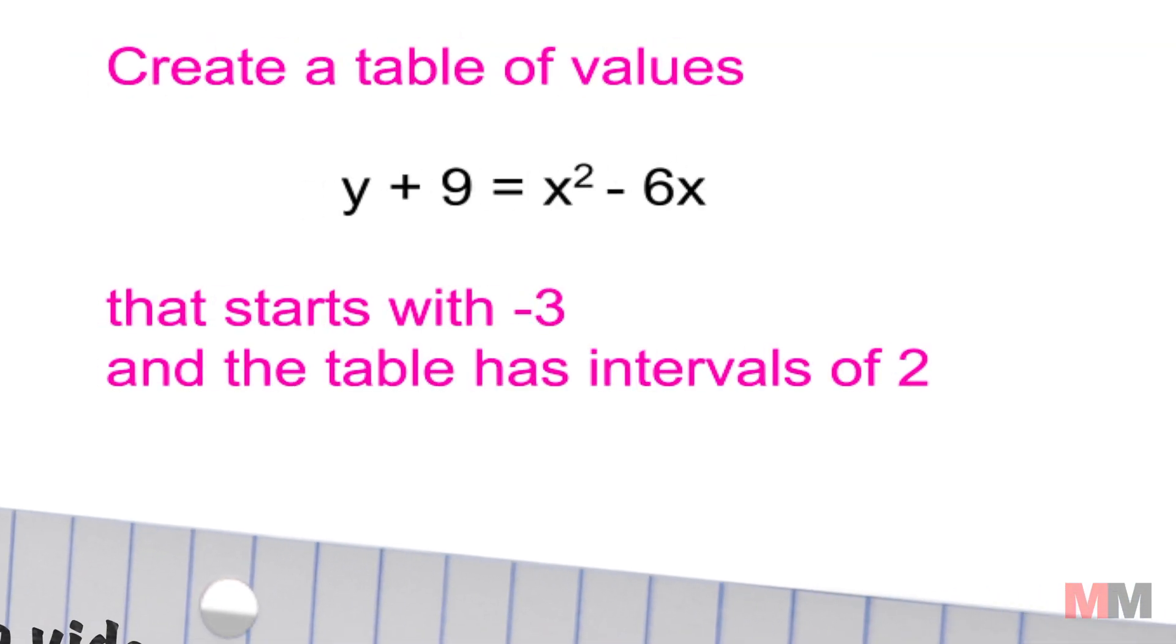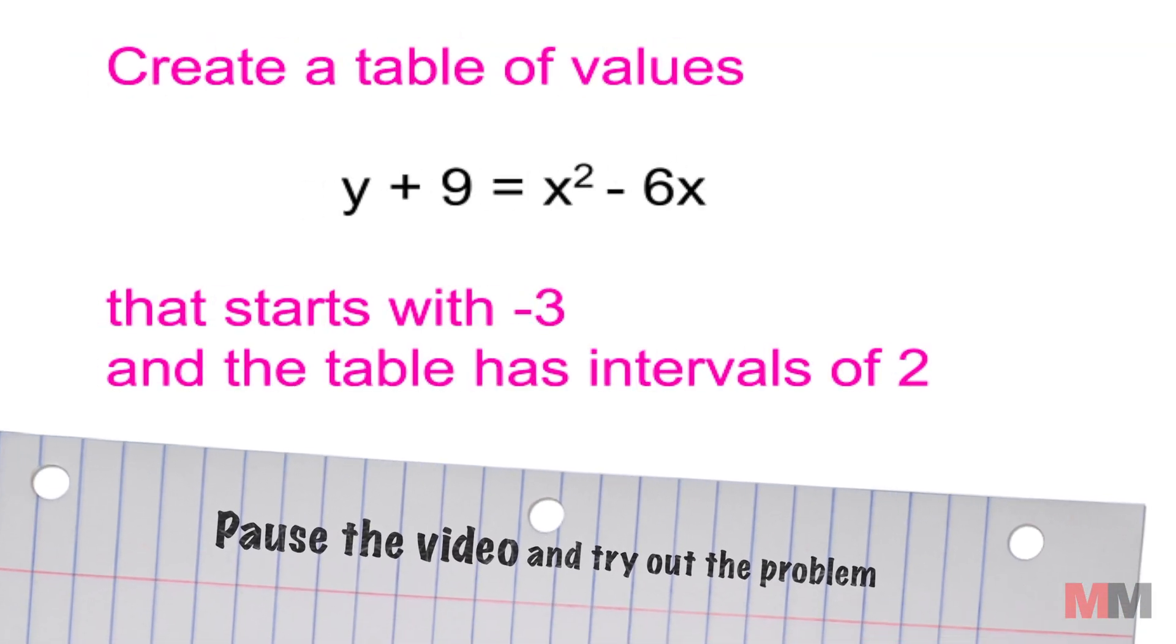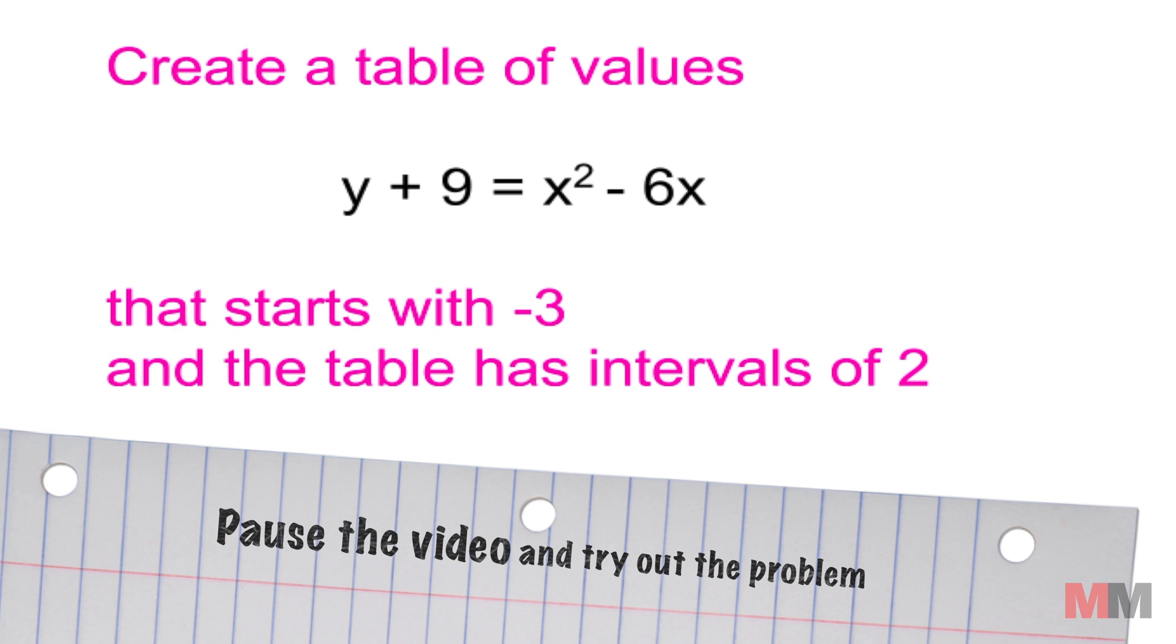Alright so in this problem right here I want you to create a table of values for this equation, it's another quadratic equation, but I want you to customize that table where I want you to start that table at negative 3 and I also want you to use intervals of 2, so you want it to count by 2's. So pause the video, try it out, let's see if you remember how to make a table on the TI-84. When you are done just unpause the video and I will go over how that looks like in case you forgot.